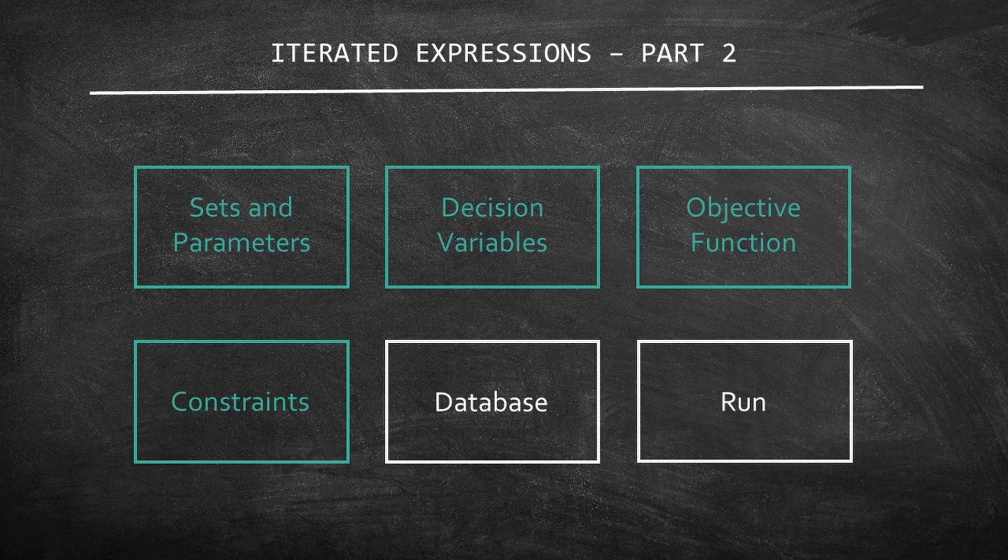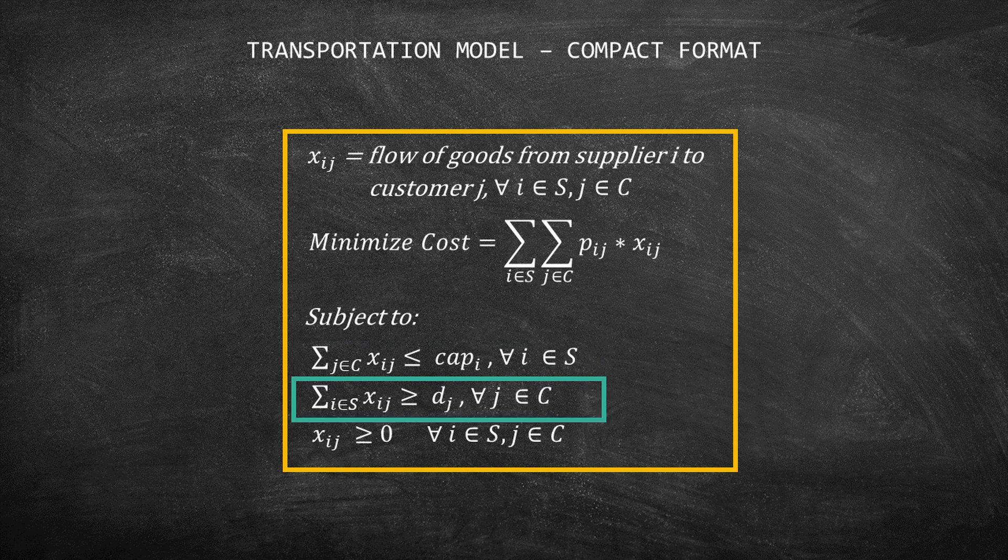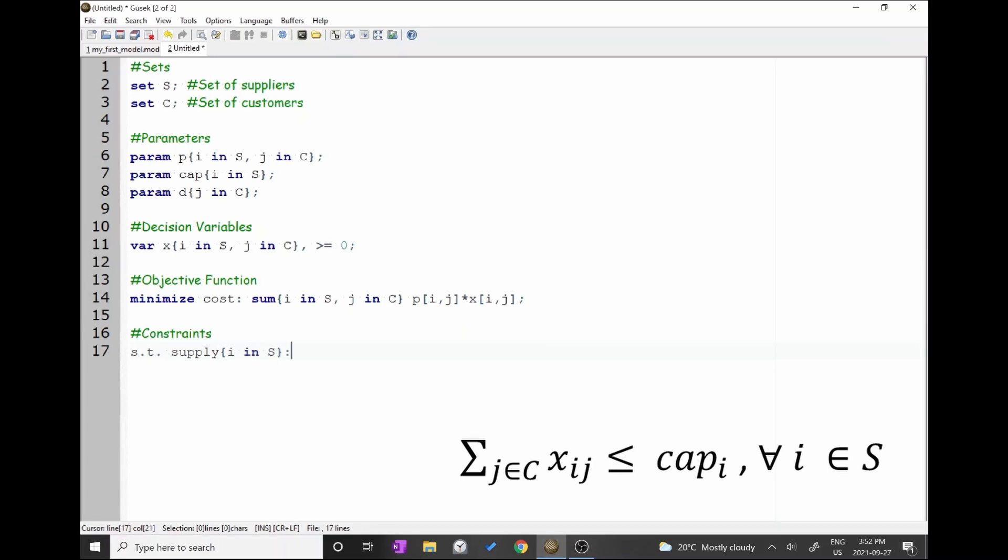Great! Now we need to inform the constraints to Gusek. If you recall, we have two constraints, one to the suppliers and one to the demands. Let's start with the suppliers constraint. First, type s dot t dot to indicate that it is a constraint. Then type the name of the constraint. I will name it supply. Next, we need to indicate how many constraints we are going to have. Remember that at the end of the constraint, we had a statement of for all i in s. This is what we'll add in our code. So type keys i in s, close and add a colon.